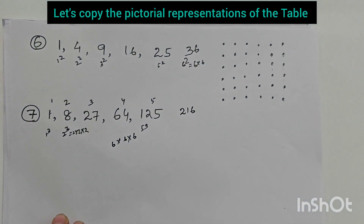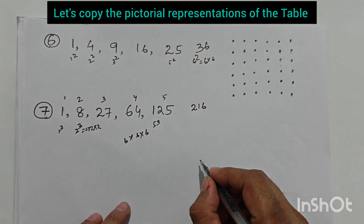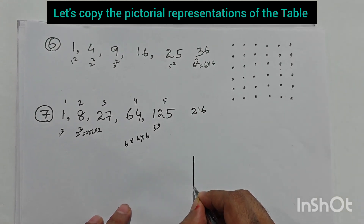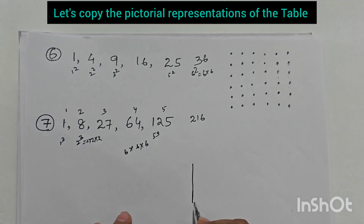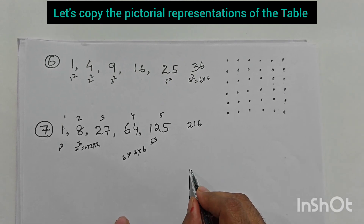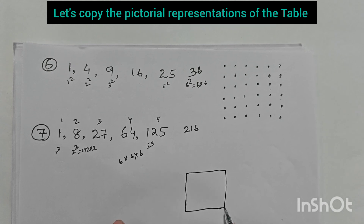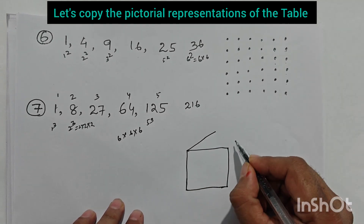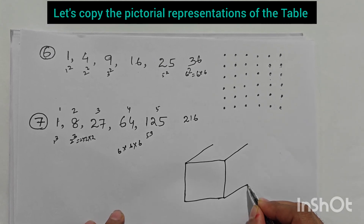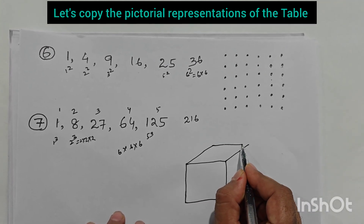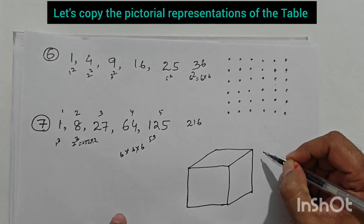We represent 216 in pictorial cube form. We draw a cube shape where each side is six units. We join all sides, each measuring six centimeters in length, breadth, and height. If you draw through a scale, it will be a perfect cube.